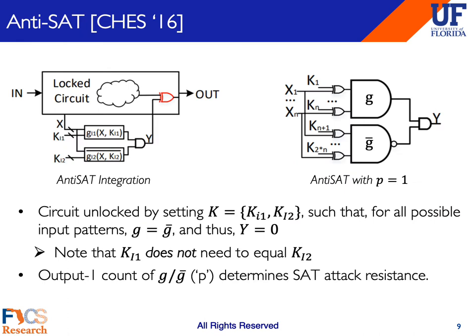One of the more notable SAT-resistant locking techniques is anti-SAT, introduced at CHESS 2016. A SAT-resistant locking block is stitched into the original design netlist. The block uses a pair of complementary logic blocks G and G-bar that are ANDed together, with G receiving key Ki1 and G-bar receiving key Ki2. Ki1 and Ki2 must be set such that the outputs of G and G-bar are always equal to each other, meaning the output Y is always zero when the correct key is provided, and the circuit functionality is never corrupted via the XOR gate.